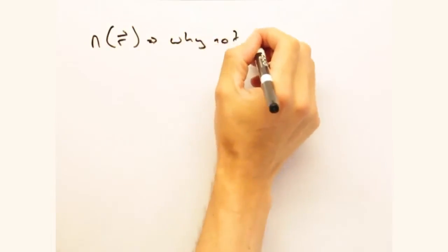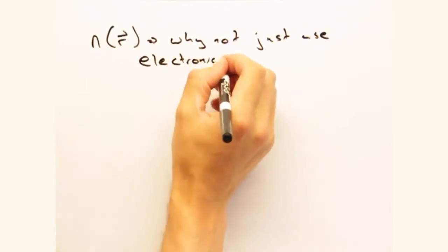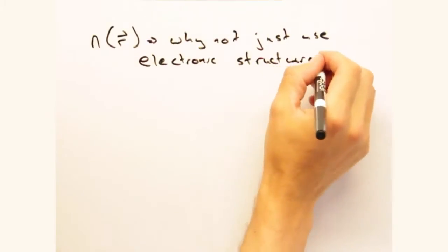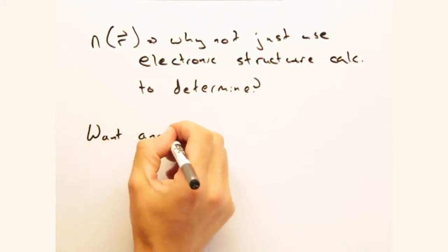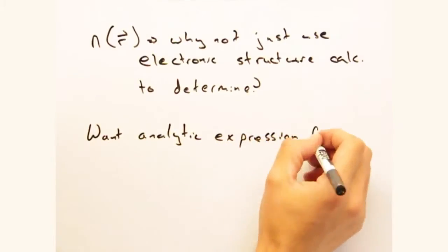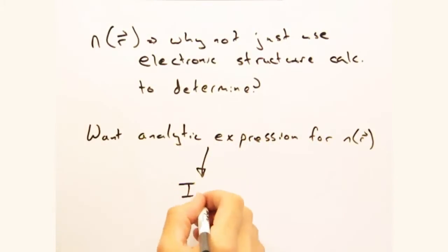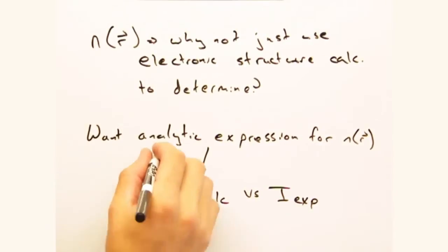But if all we care about is intensity, we could just solve for n of r from electronic calculations, and then do a numeric integration to get intensity, right? We could. However, we ultimately want an analytic expression because in practice, you want to go from an intensity spectrum and solve backwards for the scattering density.